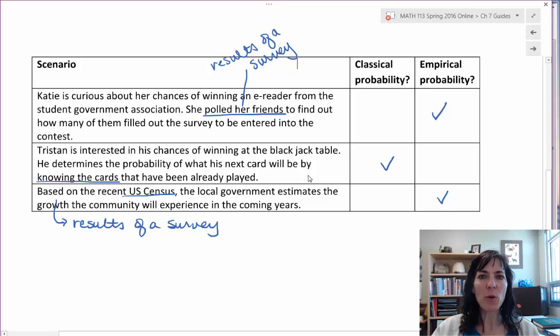That would be classical probability because he's able to use the probability for each of the cards showing being equal. And he already knows what's been played, so that's the part that he can't have a possibility of having anymore. So he's using classical probabilities there.